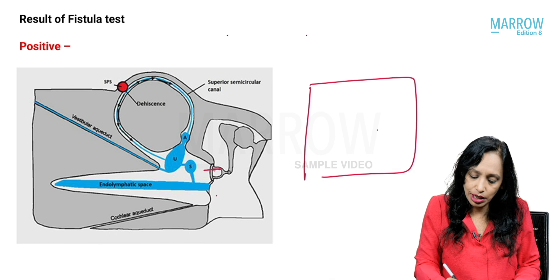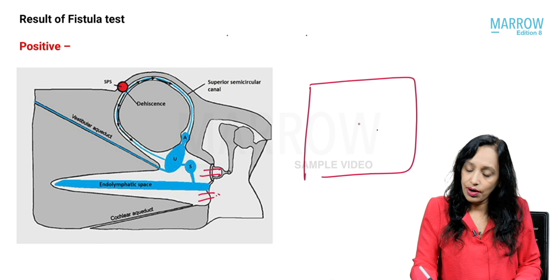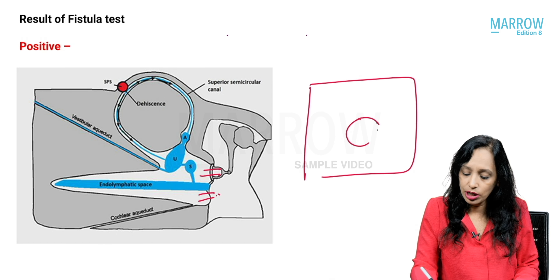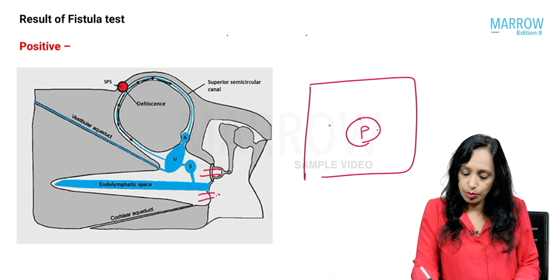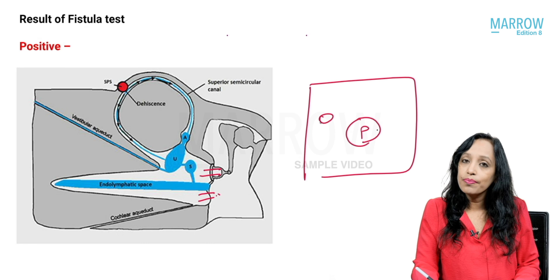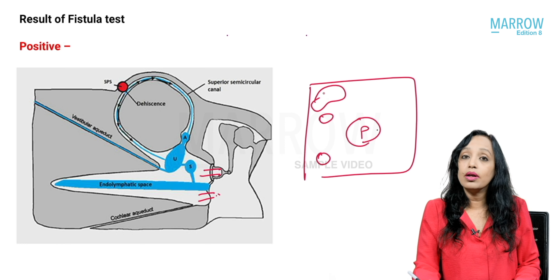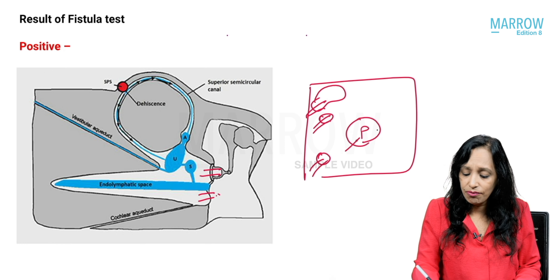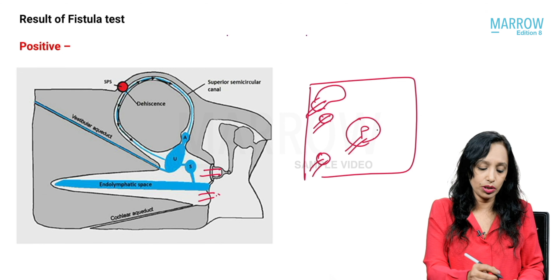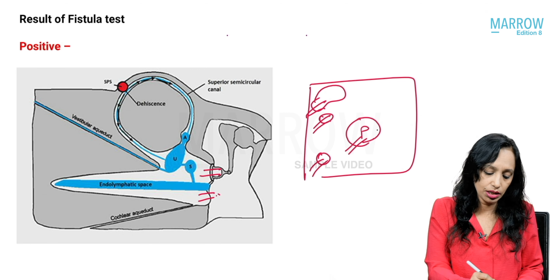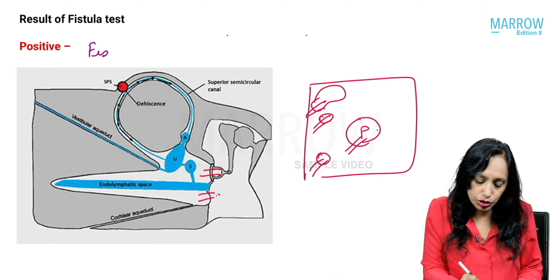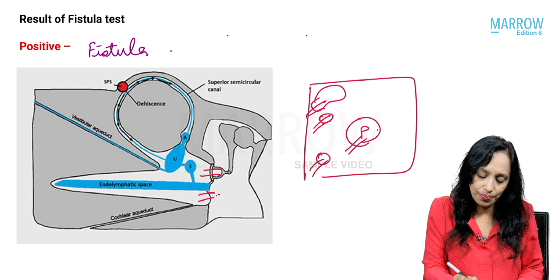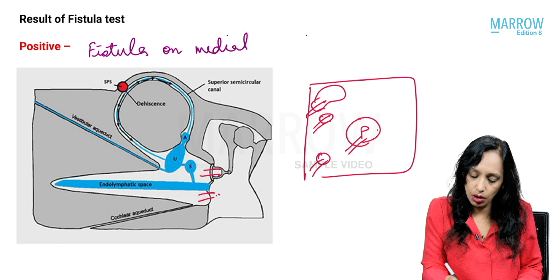A positive fistula test indicates a fistula on the medial wall. The medial wall structures include: the promontory, oval window, round window, and lateral semicircular canal. So if there is a fistula anywhere on the medial wall, the fistula test will be positive.